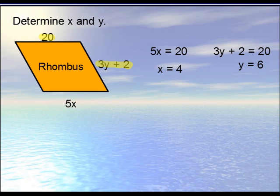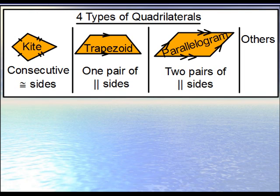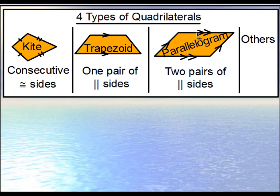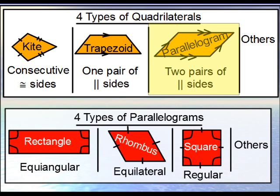Let's summarize. There are essentially four types of quadrilaterals: kites, trapezoids, parallelograms, and if it's not one of these three, it's just an ordinary quadrilateral. Kites don't have any parallel sides — their key characteristic is two pairs of congruent consecutive sides. For a trapezoid, the only prerequisite is exactly one pair of parallel sides. Parallelograms can be subcategorized into rectangles, rhombuses (or rhombi), squares, or just an ordinary parallelogram. That's really how we categorize four-sided figures.